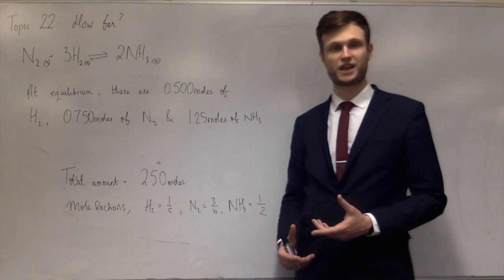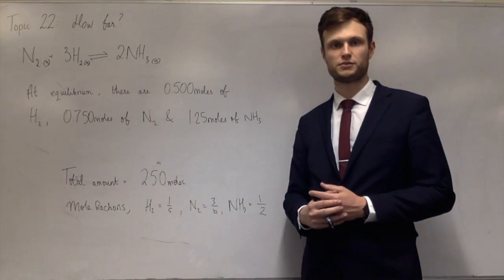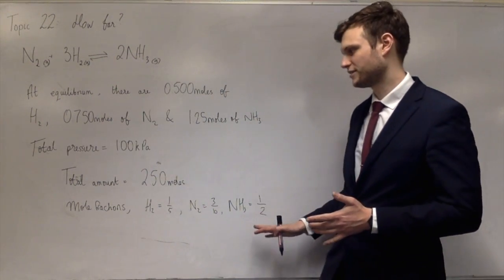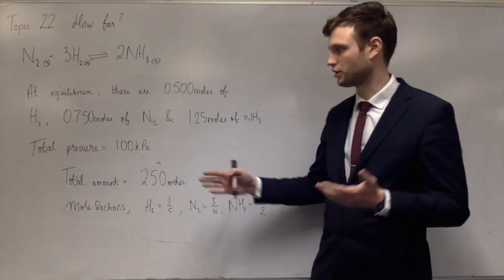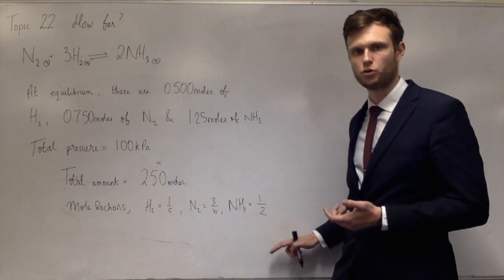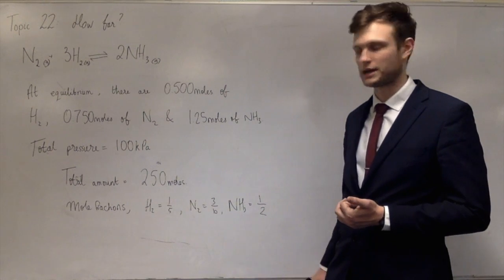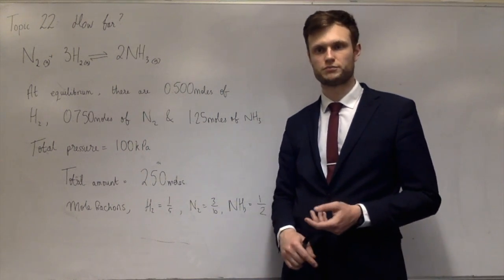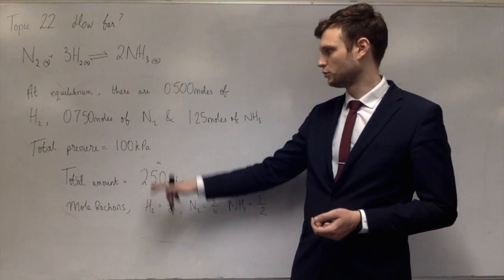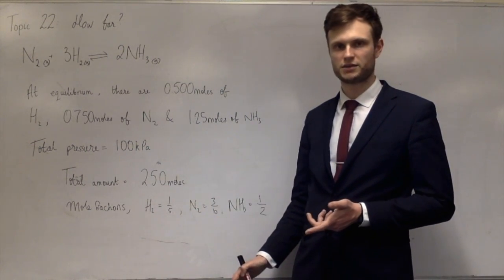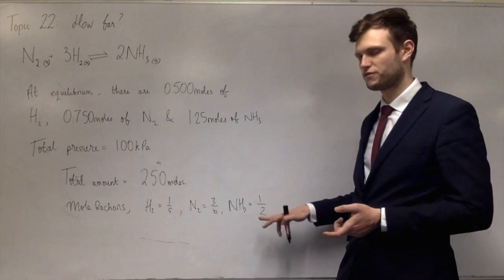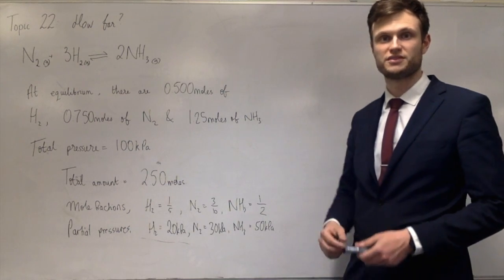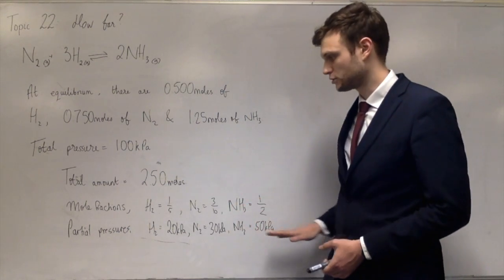Partial pressure requires knowing the total pressure — let's say 100 kPa. Partial pressure is the fraction of the total pressure due to each gas, calculated by multiplying the mole fraction by the total pressure. So partial pressure of hydrogen is 20 kPa, nitrogen is 30 kPa, and ammonia is 50 kPa. The KP expression is the same form as KC but uses partial pressures instead of concentrations.